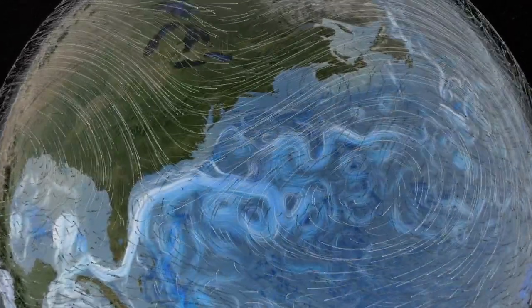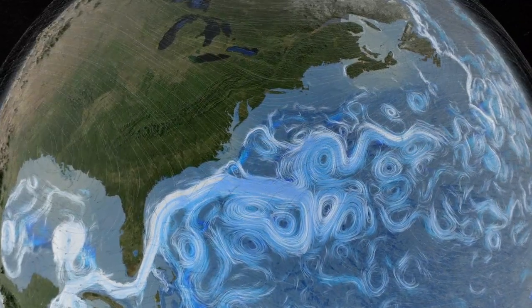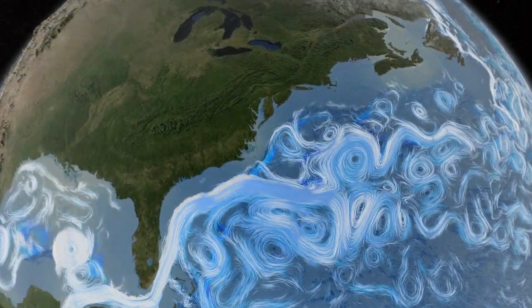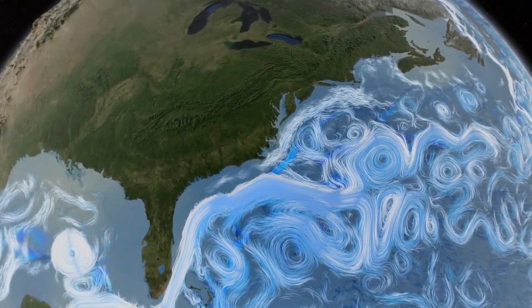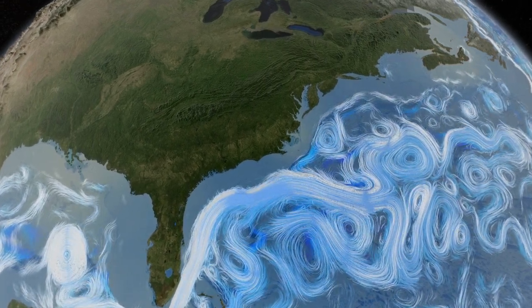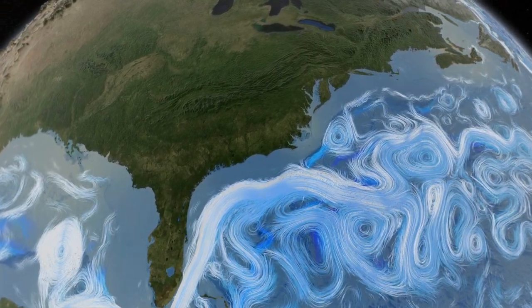Wind currents drive surface ocean currents. This computer simulation shows the Gulf Stream winding its way along the coast of North America.